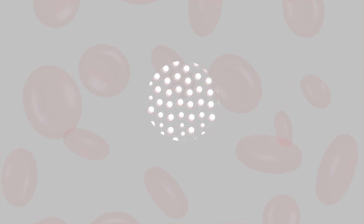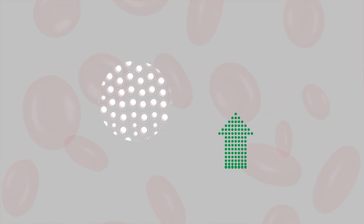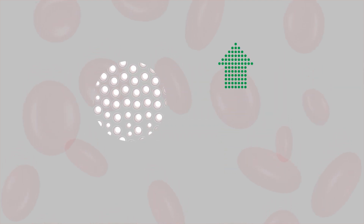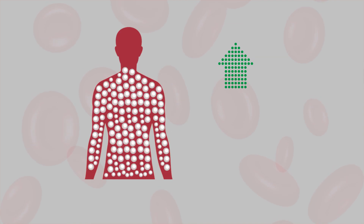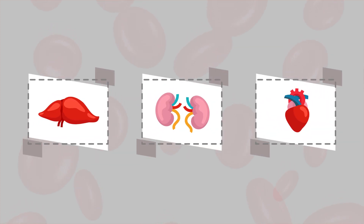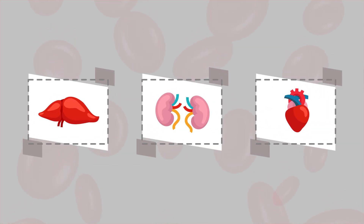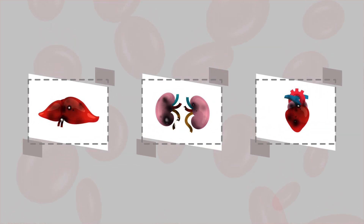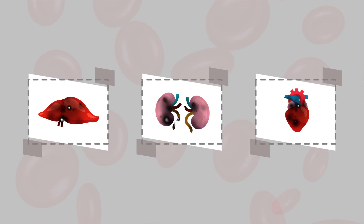Conversely, iron storage and ferritin levels increase when more iron is absorbed than the body needs. This can lead to the progressive buildup of iron compounds in organs and may eventually cause their dysfunction and failure.